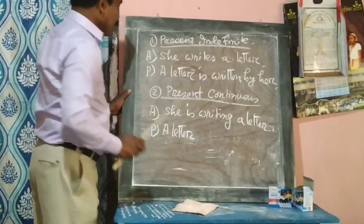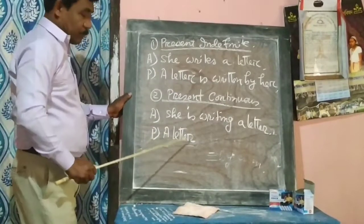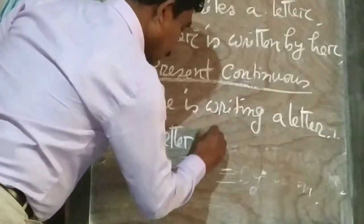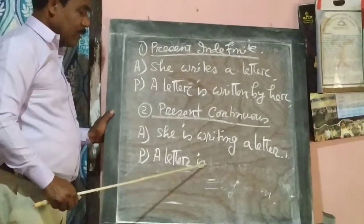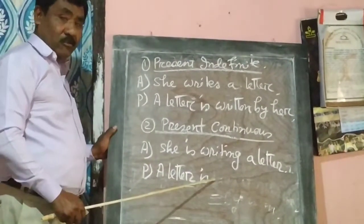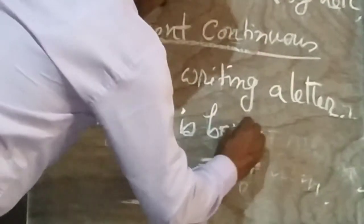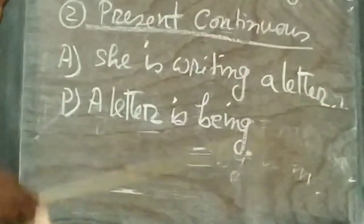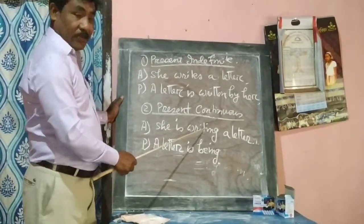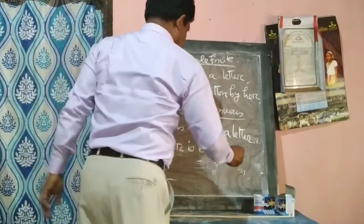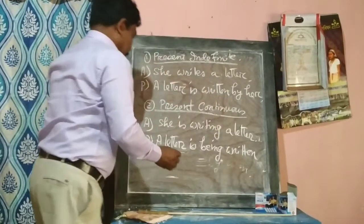In present continuous tense, the passive form uses 'is being' plus the past participle. The verb 'write' has the forms: write, wrote, written. We add the preposition 'by' and then the original subject 'C.'